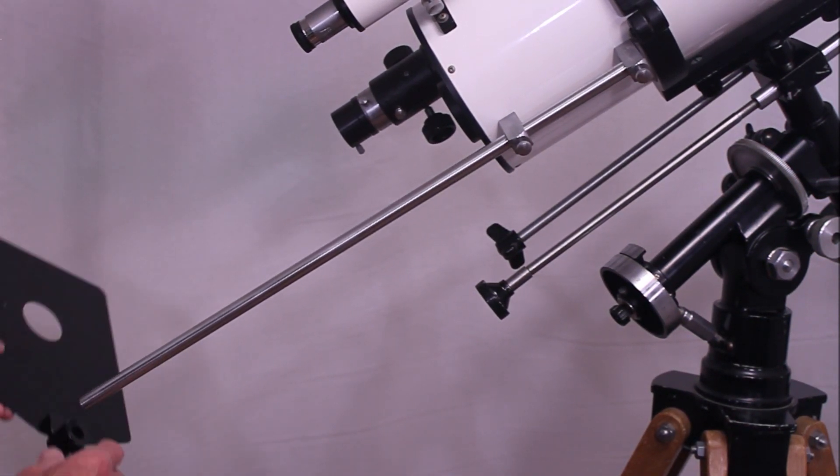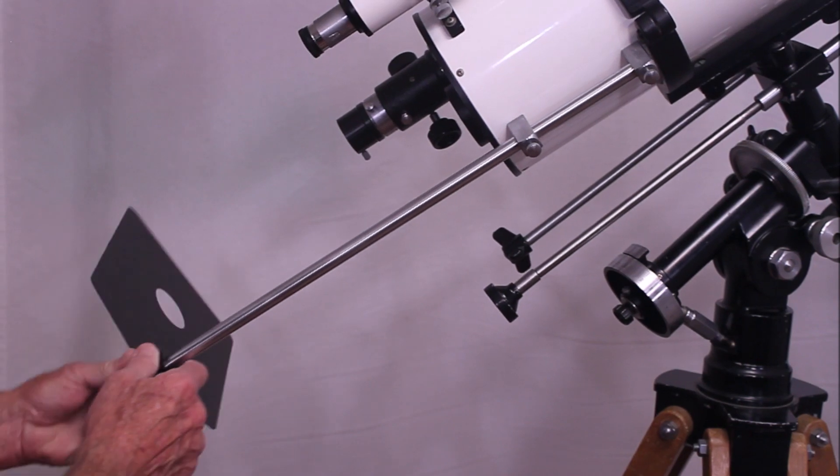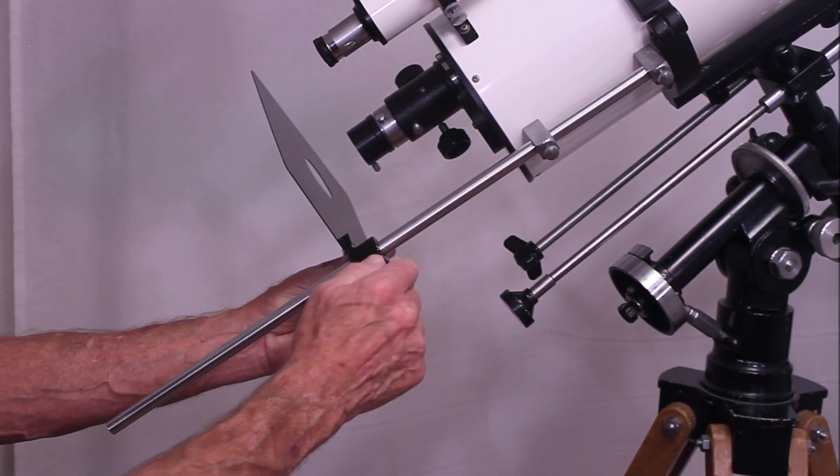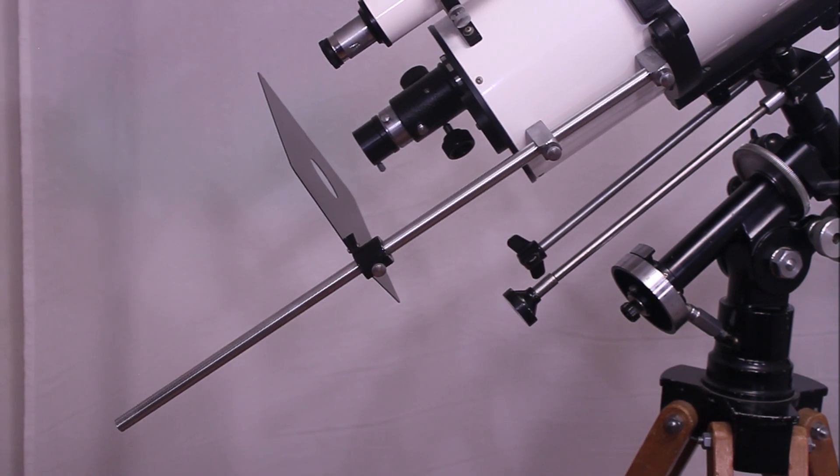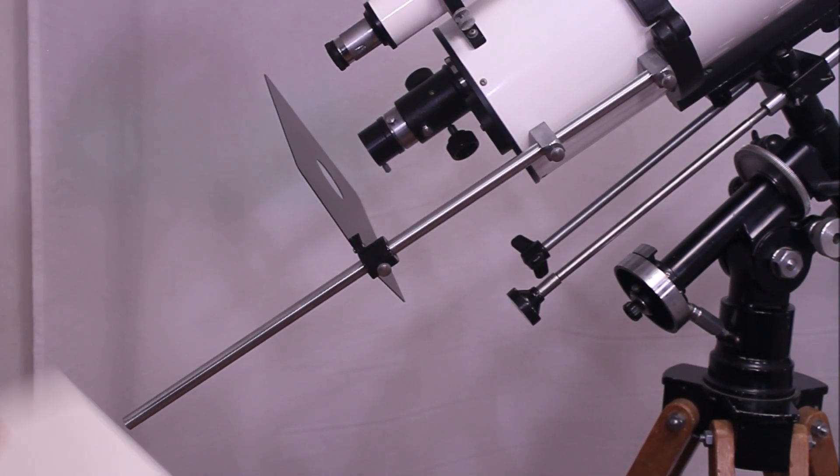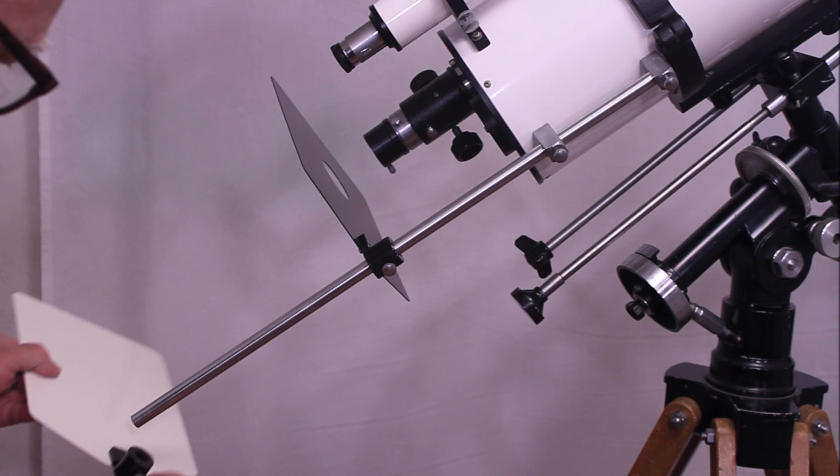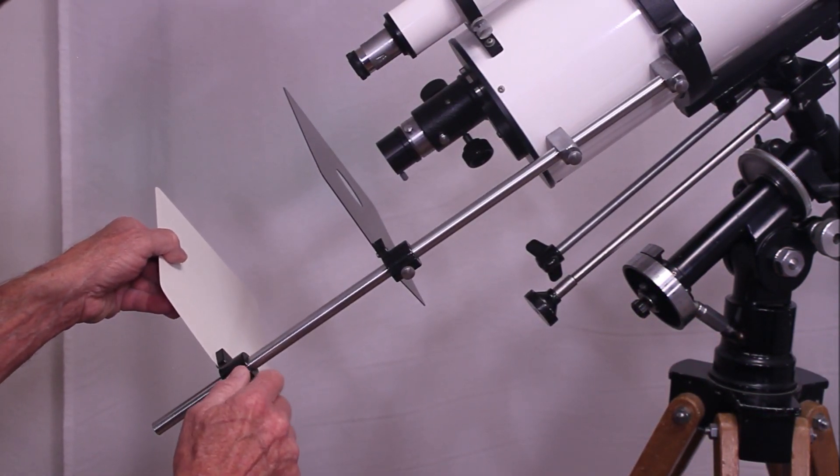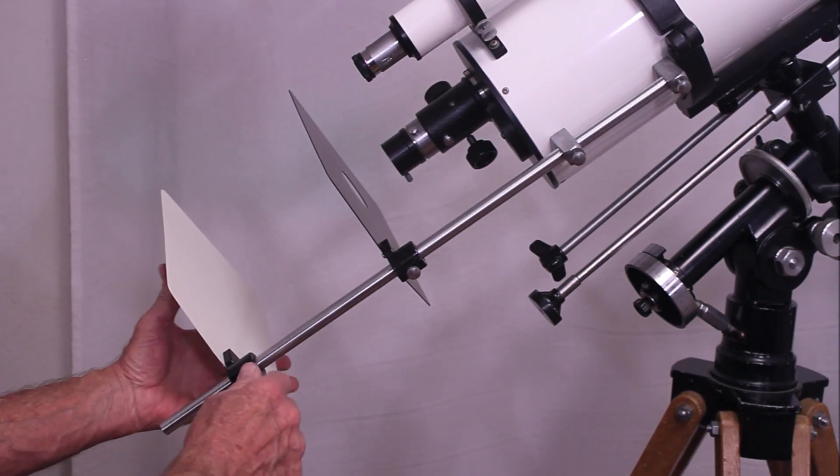Look at the odd shape of this solar projection screen. It has to be elongated because of the way this thing is configured. Slide this baby on here. The similarly elongated kind of a white screen. Now we're set up for solar projection.